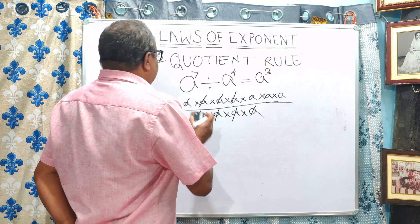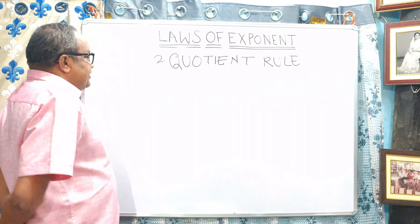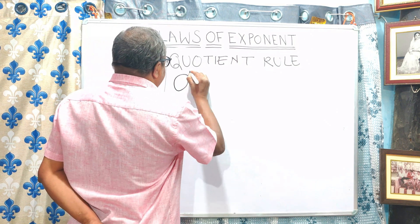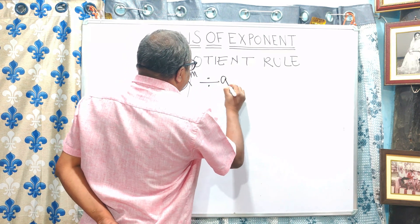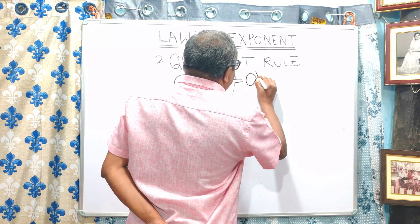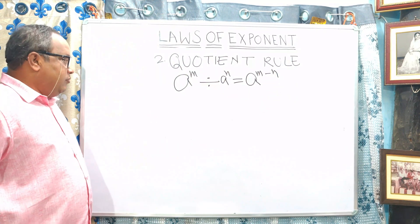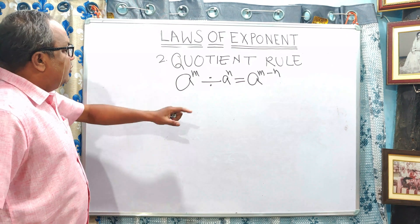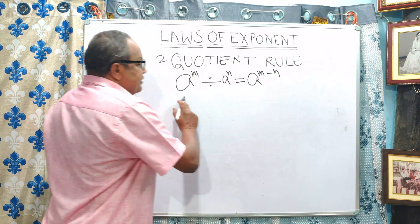As a standard formula, we can write: A to the power m divided by A to the power m is equal to A to the power m minus m. One thing should be remembered — this product rule and quotient rule are applicable only for numbers having the same base.